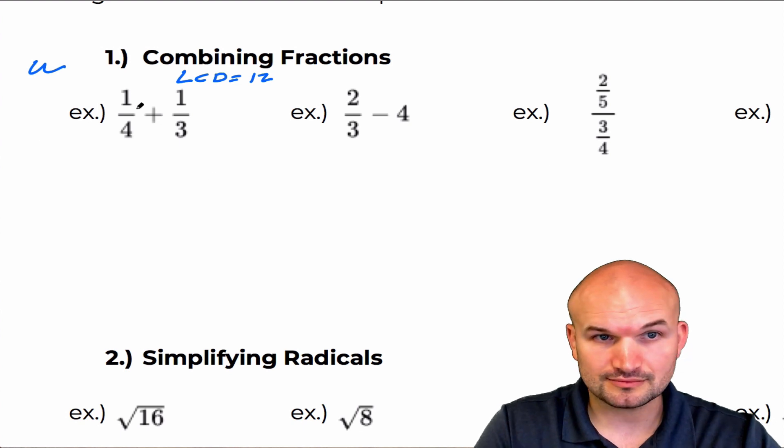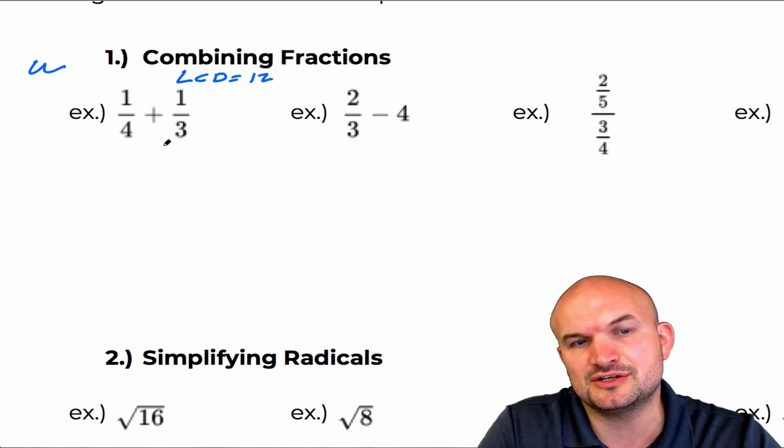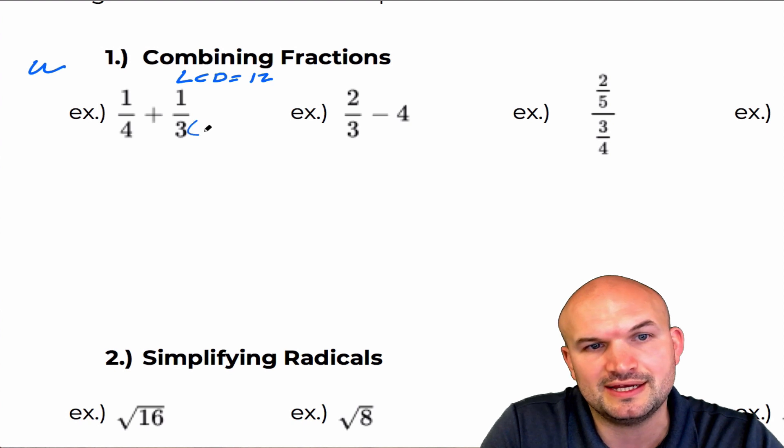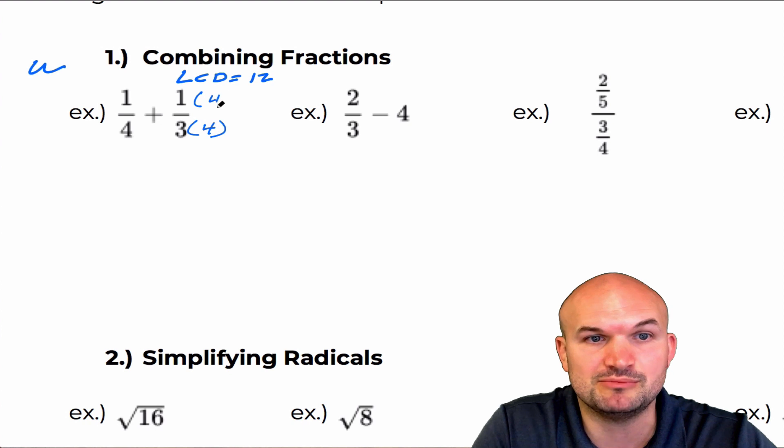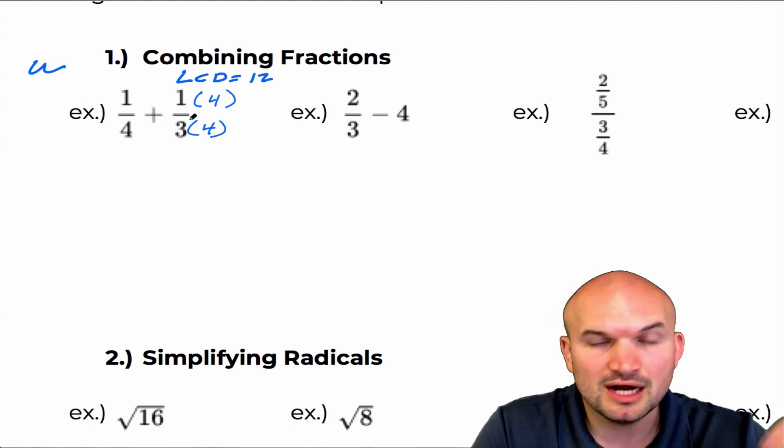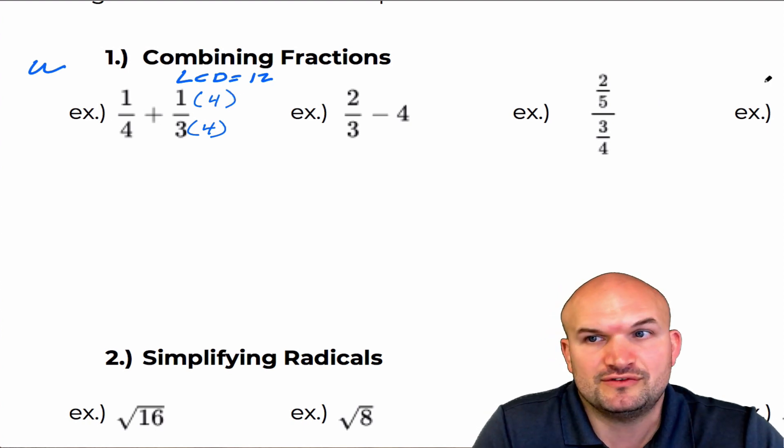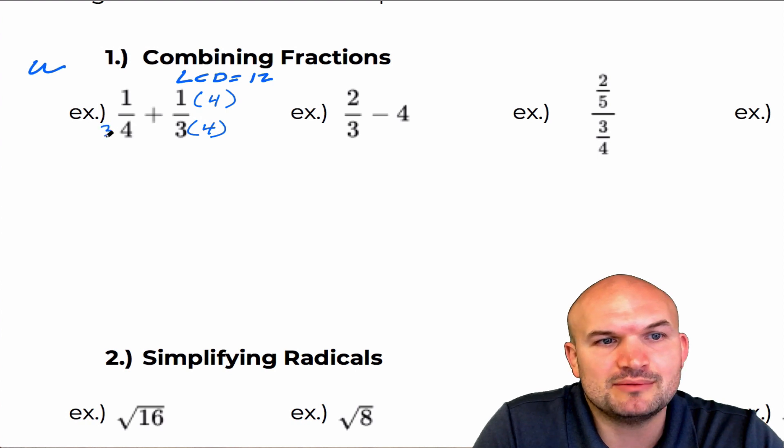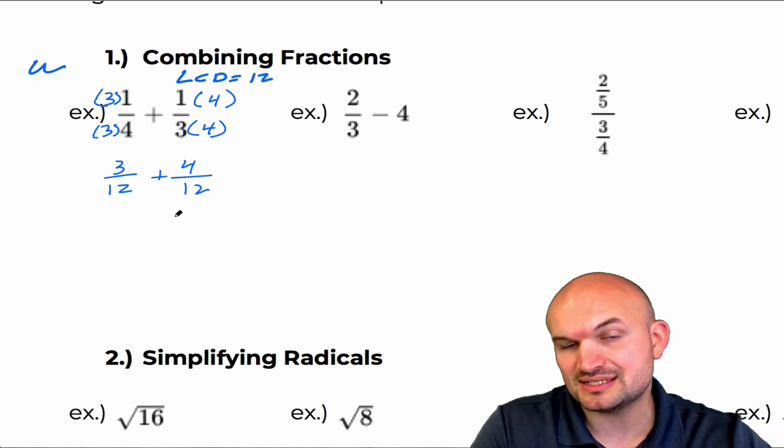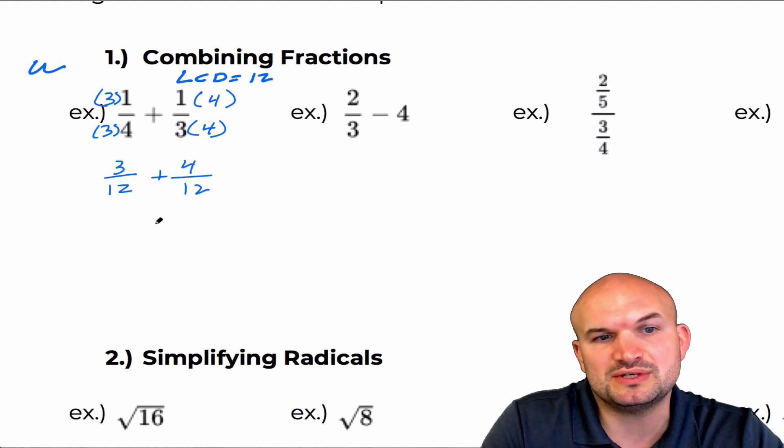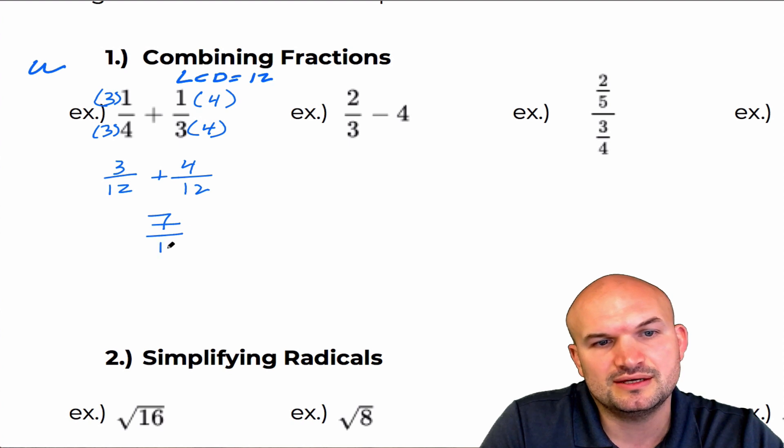So therefore what I need to do is I need to get both of these denominators to be 12. So I'm going to multiply here by four. Now to keep the fraction what we call an equivalent fraction, you got to make sure you multiply the top and the bottom by four. Otherwise, you're changing the value of the fraction. And on the left side, I'm going to multiply by three over three. So by doing that, now what I obtain is three twelfths plus four twelfths. And now what you can see is now we can add them because they have common denominators. So three twelfths plus four twelfths is just going to be seven twelfths.